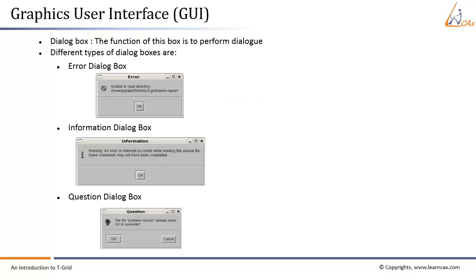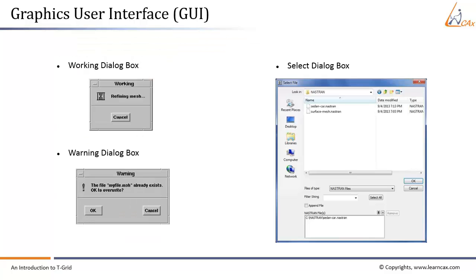The dialog box is used to display messages to the user. Types include: error dialog box — alerts for an error that has occurred; information dialog box — reports information, click OK to close; question dialog box — asks questions that need to be answered; T-Grid working dialog box — appears when T-Grid is performing an operation and closes automatically; warning dialog box — displays a warning and asks whether to proceed. The select file box allows selecting a file for reading or writing.